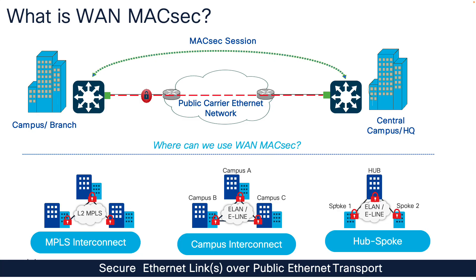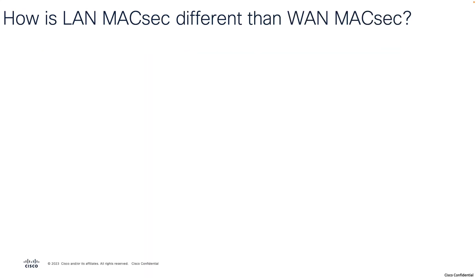This enables various use cases where WAN MACsec can be leveraged in an MPLS interconnect for an L2 MPLS, or used as a campus interconnect or hub-and-spoke design leveraging E-line or E-LAN services provided by public carrier Ethernet or service providers.